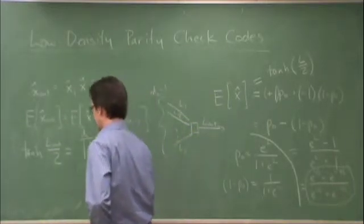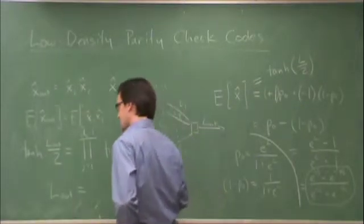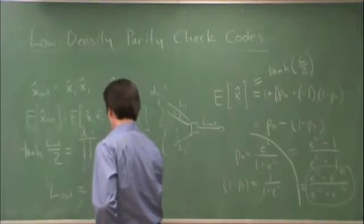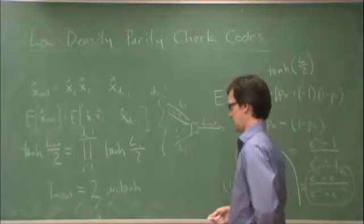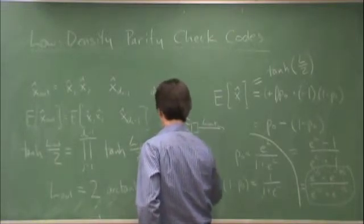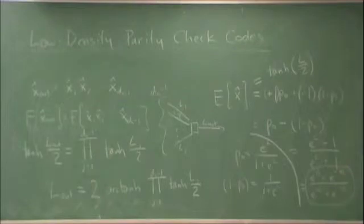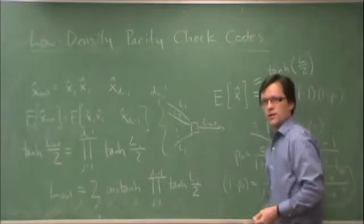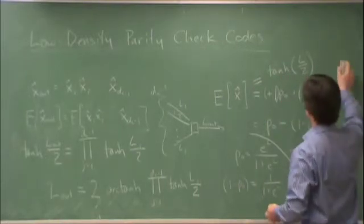This is equal to the product from j equals 1 to dc minus 1 of tanh Lj over 2. So isn't that nice? We've boiled down LDPC decoding to the following two operations.